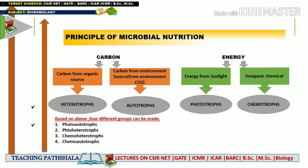Based on this classification — depending upon both carbon and energy source — we categorize microorganisms into four groups: first, photo-autotrophs; second, photo-heterotrophs; third, chemo-heterotrophs; and fourth, chemo-autotrophs.